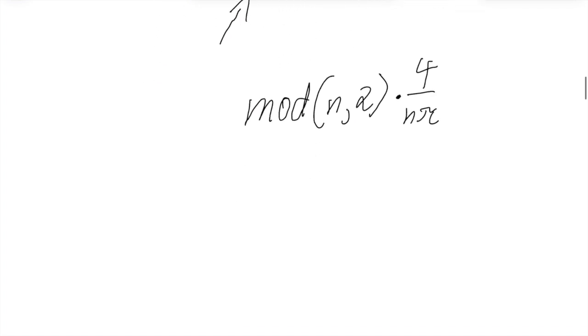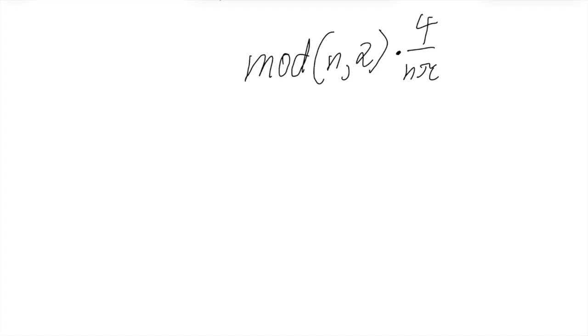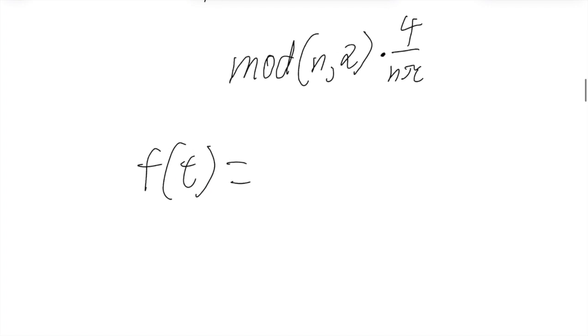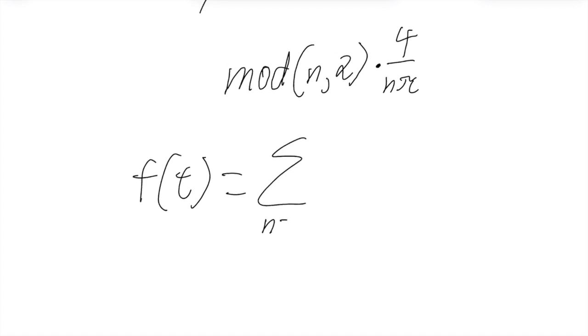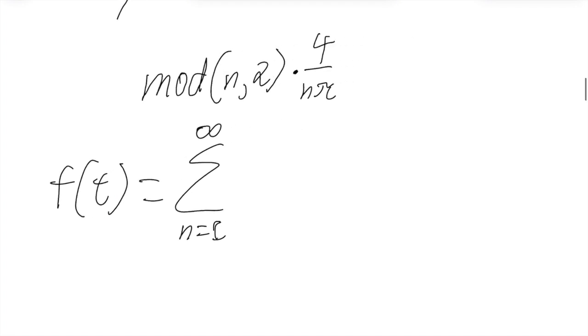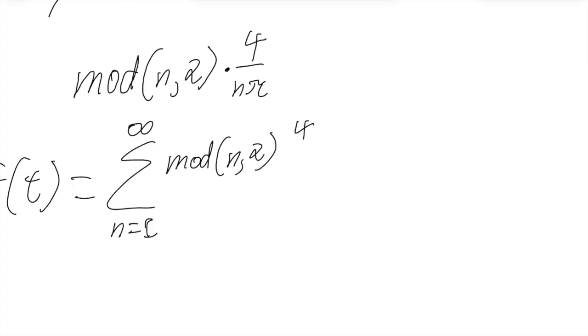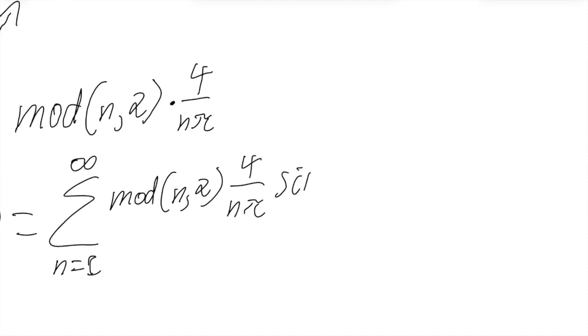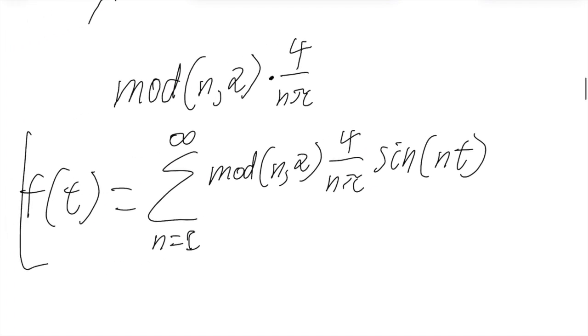So finally, let's write out our expansion. So f(t) will equal to sigma from n equals 1 to infinity of mod n 2 times 4 over nπ times sine of nt. And thus, we have used the Fourier series to write the square wave using a sum of sines.